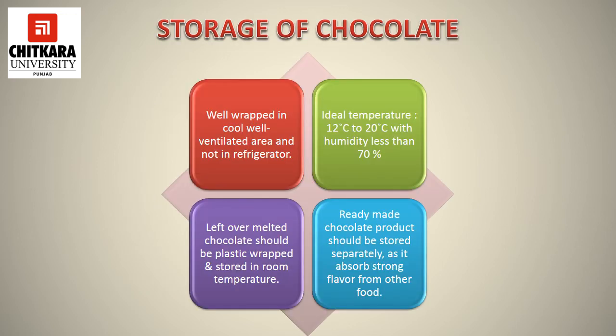The most important step is the storage of chocolate. Chocolate should be well wrapped and kept in a cool, well-ventilated area — not in the refrigerator. The ideal temperature for storing chocolate is 12°C to 20°C, with humidity less than 70%. Leftover melted chocolate should be plastic-wrapped and stored at room temperature. Ready-made chocolate products should be stored separately, as they absorb strong flavors from other foods.